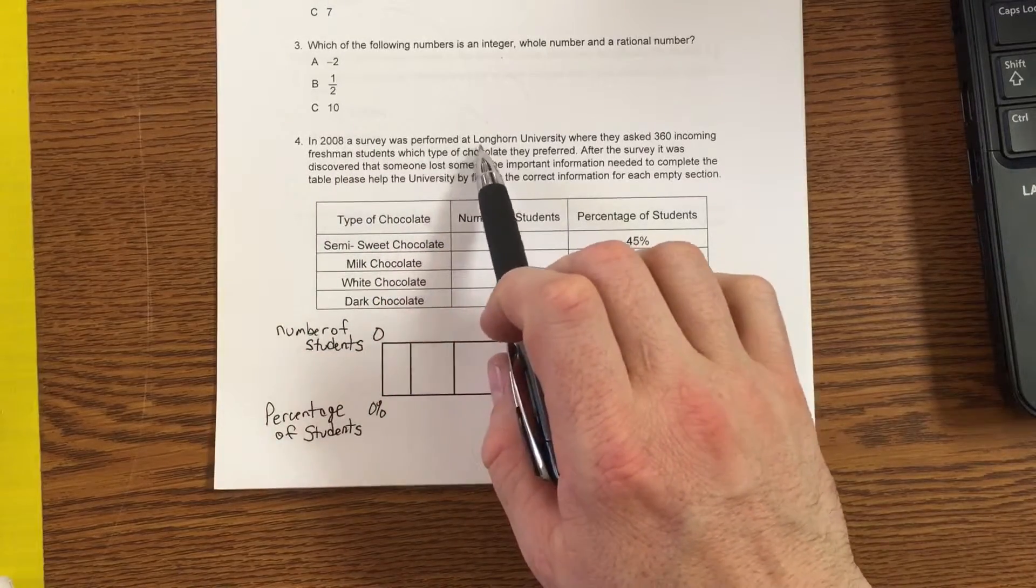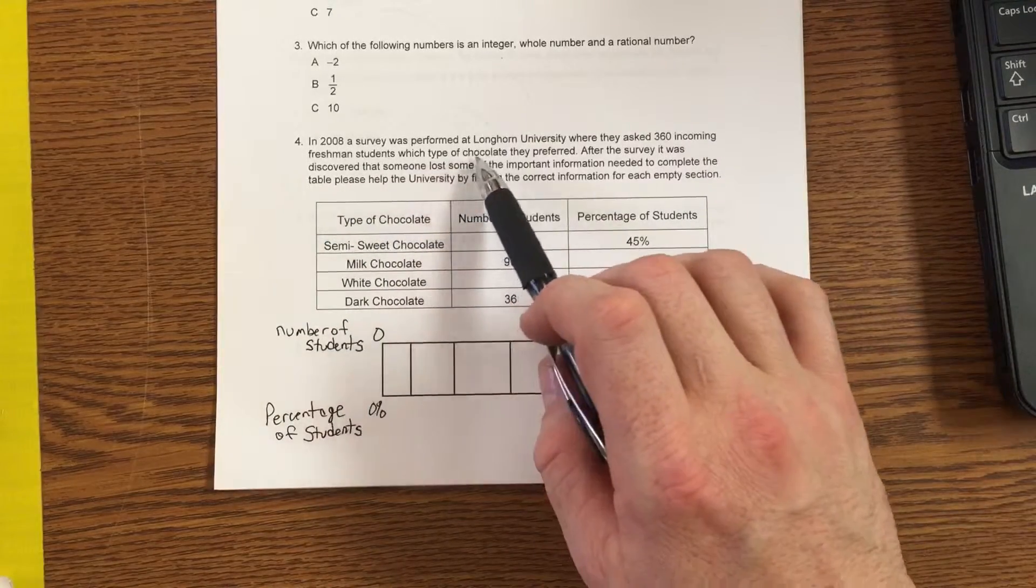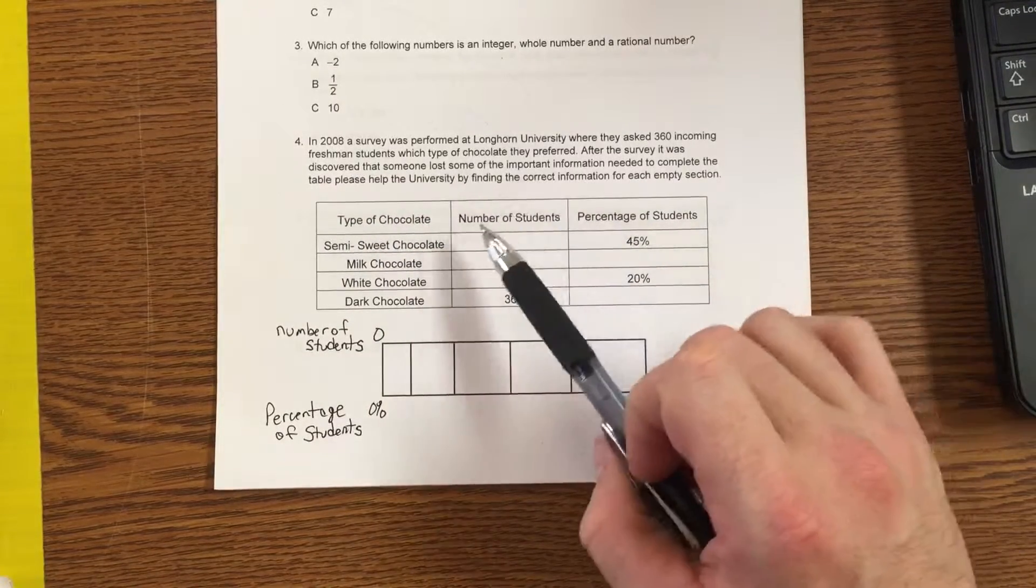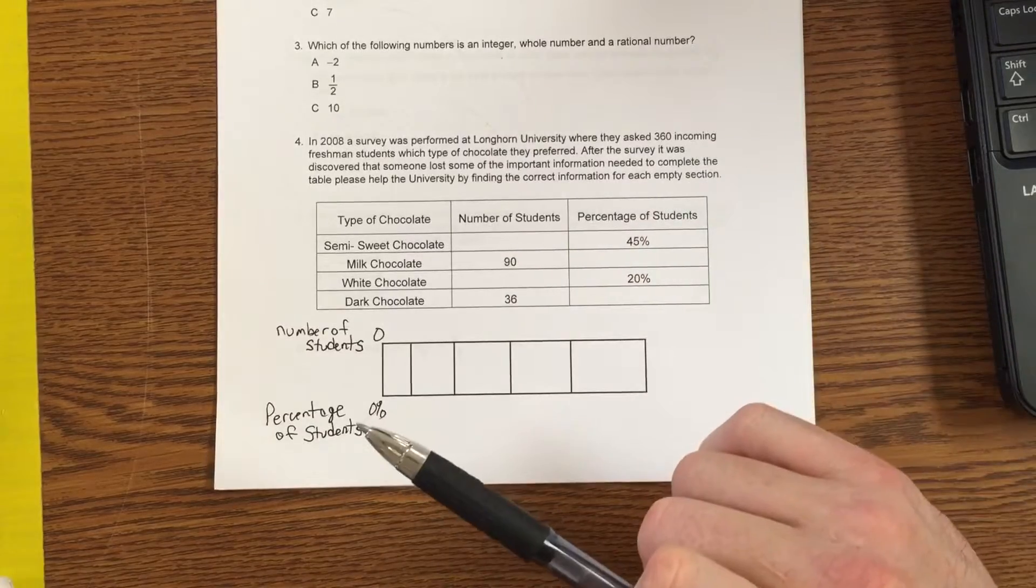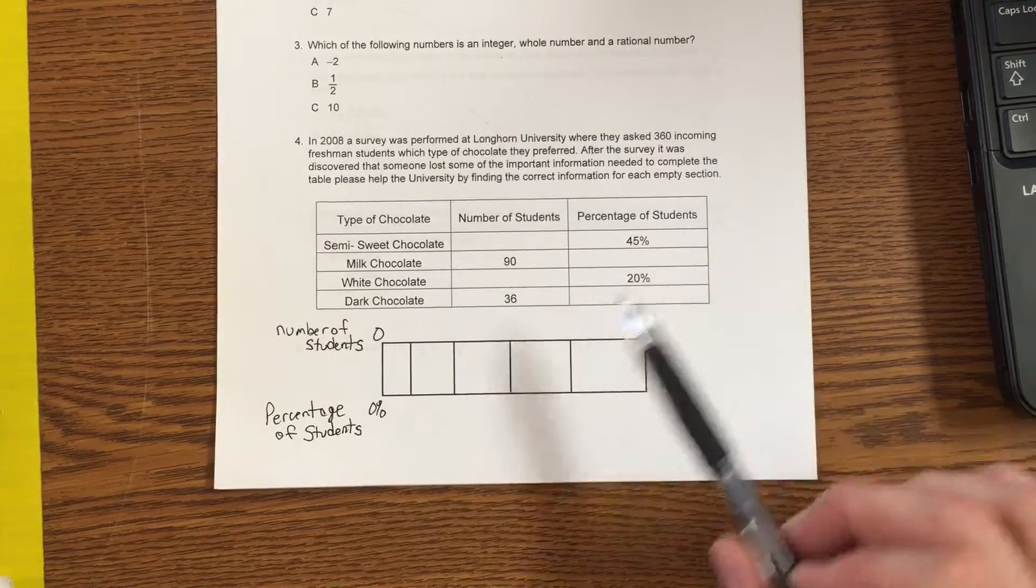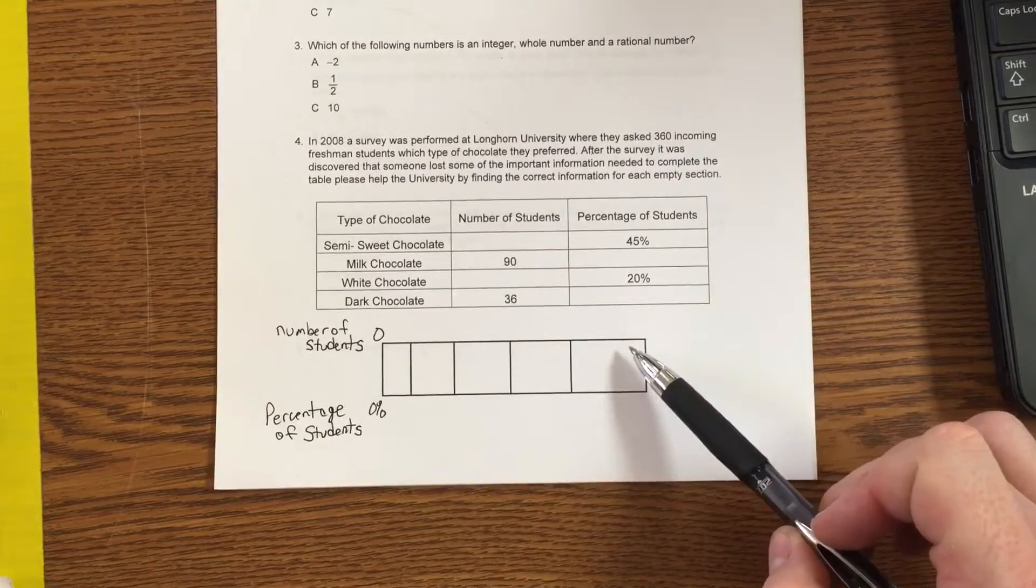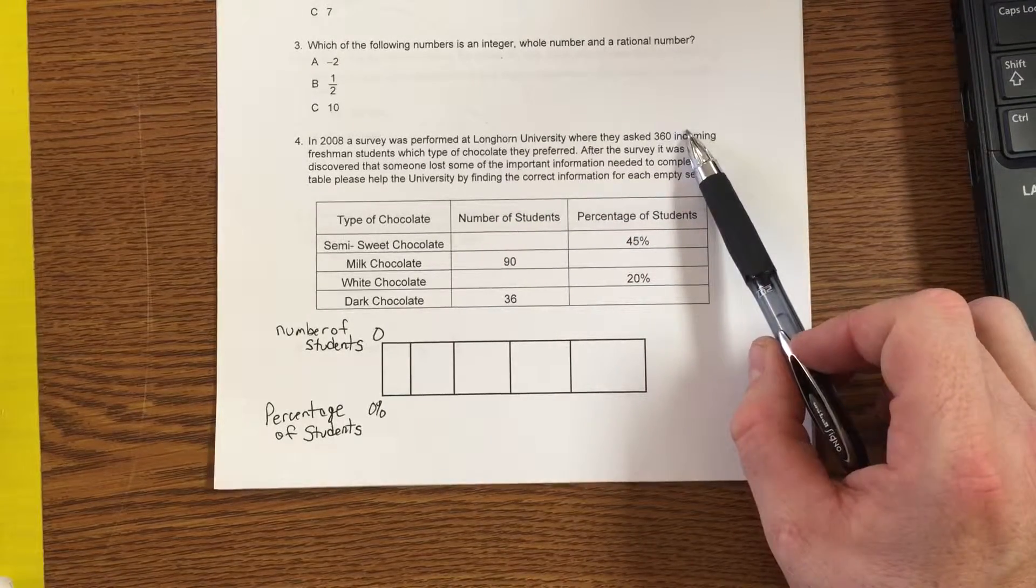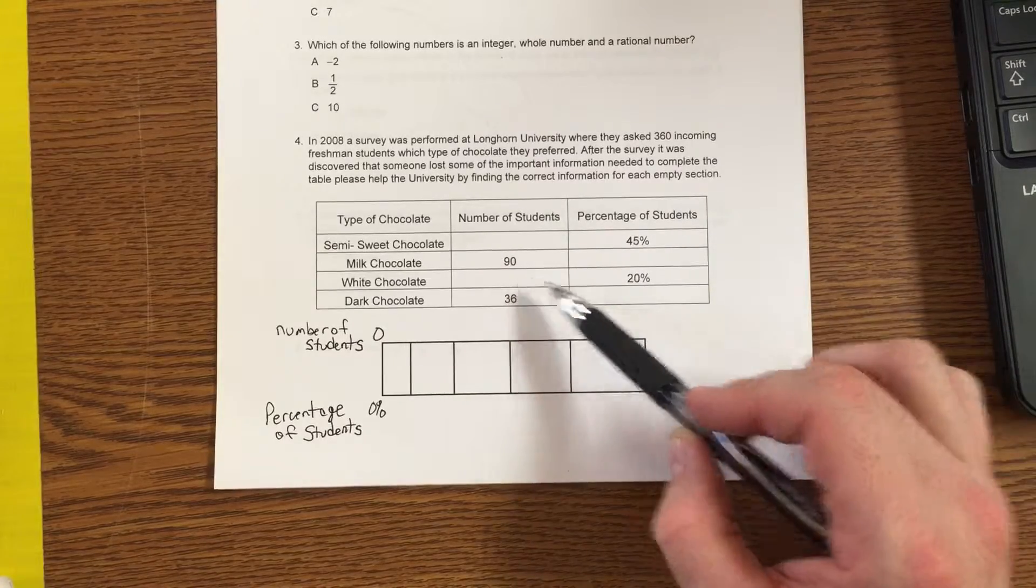In 2008, a survey was performed at Longhorn University where they asked 360 incoming freshman students which type of chocolate they preferred. After the survey, it was discovered that someone lost some of the important information needed to complete the table. Please help the university by finding the correct information for each empty section. Now I know that the percentage is not in the problem, but if you pay attention to the box down here, you have percents in it. And a percent bar is a viable option for you to solve this question. Basically, the scenario has been built that you have 360 incoming freshmen and you're going to ask them what type of chocolate they like. And then you have a situation where missing information needs to be found.